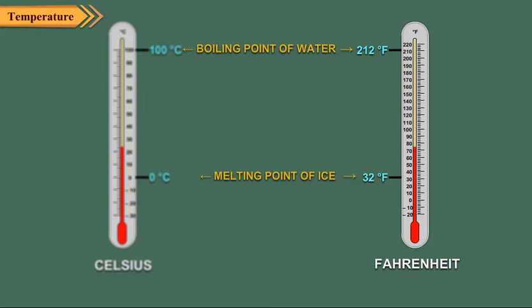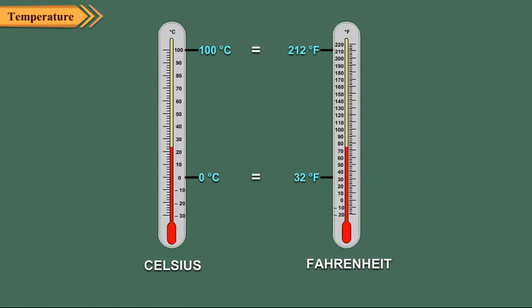Here the range is divided into 100 equal parts. If we compare the two scales, we see that 0 degree Celsius is equal to 32 degrees Fahrenheit and 100 degrees Celsius is equal to 212 degrees Fahrenheit.